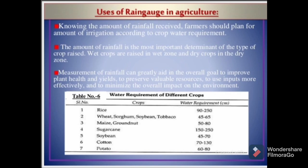Uses of rain gauge in agriculture: knowing the amount of rainfall received, farmers can plan the amount of irrigation according to crop water requirement. The amount of rainfall is the most important determinant of the type of crop raised. Wet crops are raised in wet zones and dry crops in dry zones. Measurement of rainfall can greatly aid in the overall goal to improve plant health and yields, preserve valuable resources, use inputs more effectively, and minimize the overall impact on the environment.